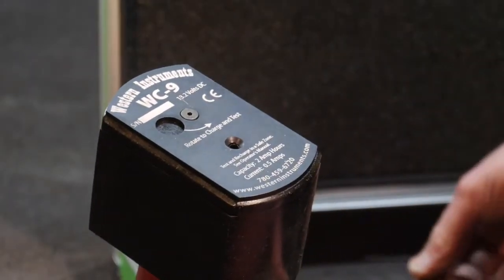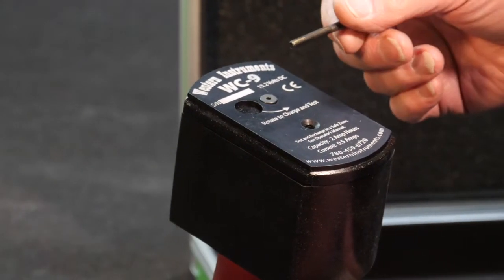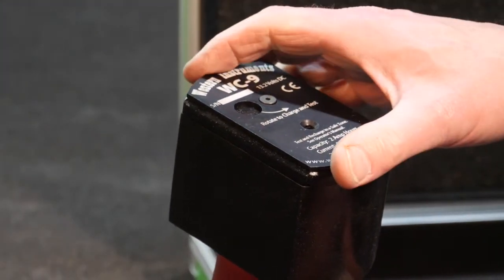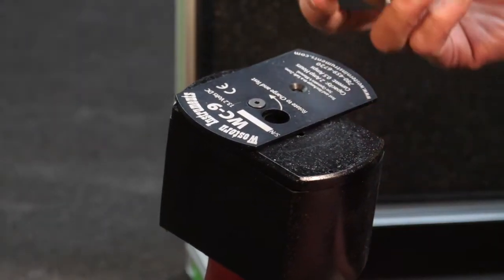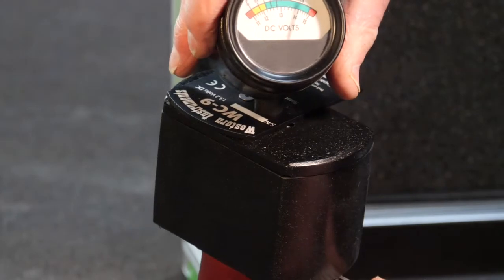We remove the number two fastener from the nameplate, rotate it approximately 90 degrees, and put our battery meter inside.